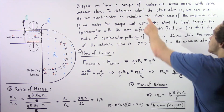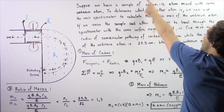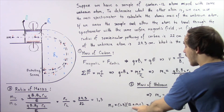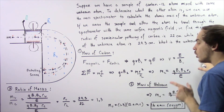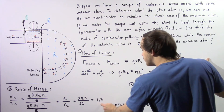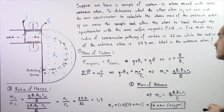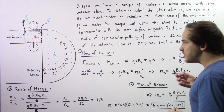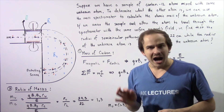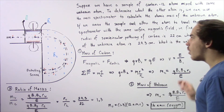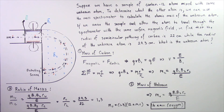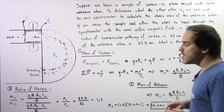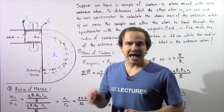Now we use the mass of the carbon atom, which is 12 atomic mass units, and multiply by the ratio of 1.3. That gives us the mass of the unknown atom — approximately 16 atomic mass units. Using the periodic table, we see that oxygen has this mass, so the second atom must be an oxygen atom.